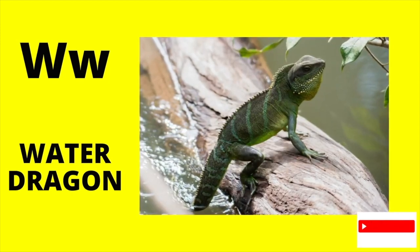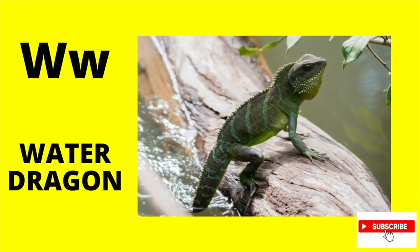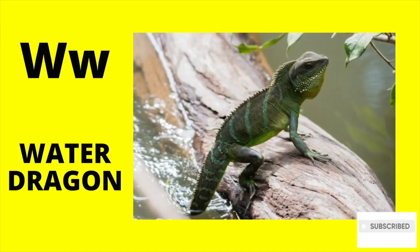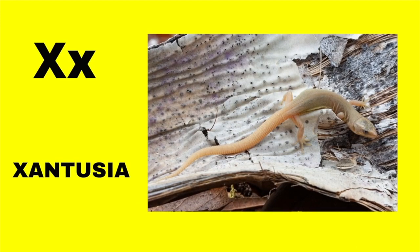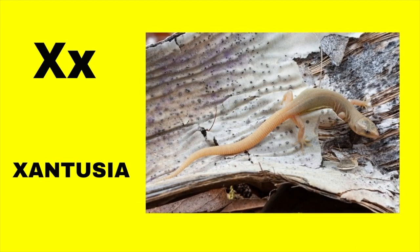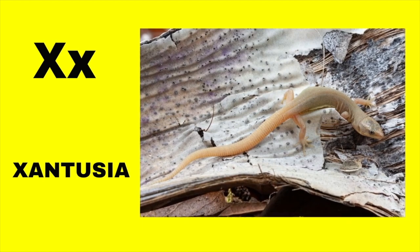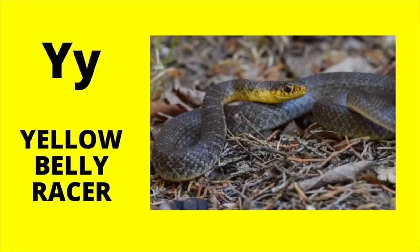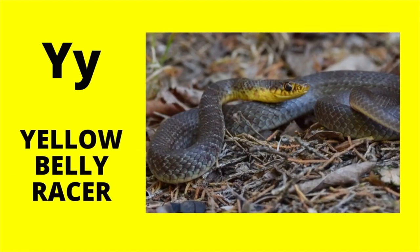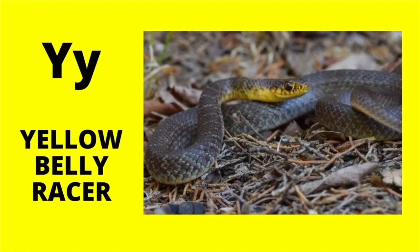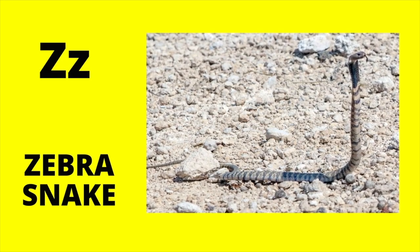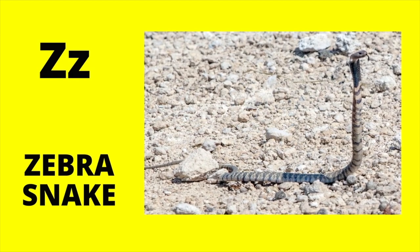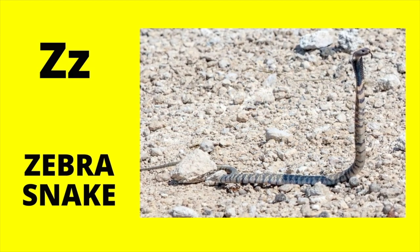W is for Water Dragon. W, water dragon. X is for Xantusia. X, Xantusia. Y is for Yellow Belly Racer. Y, Yellow Belly Racer. Z is for Zebra Snake. Z, Zebra Snake.